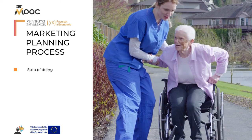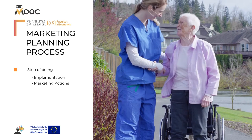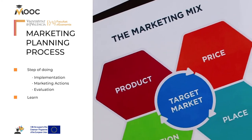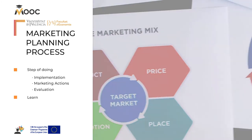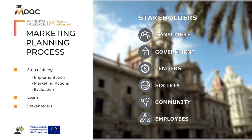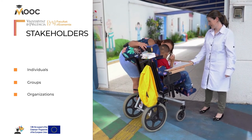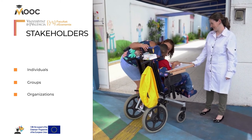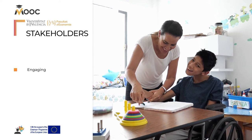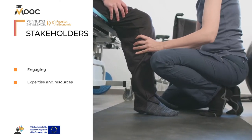The third step of doing involves the implementation of the diverse marketing actions and their evaluation. But when we design our marketing plan, it is important to consider our stakeholders. They are individuals, groups, or organizations that have an interest in your institution. Engaging with the stakeholders at the beginning of your planning process facilitates allies to join expertise and resources.